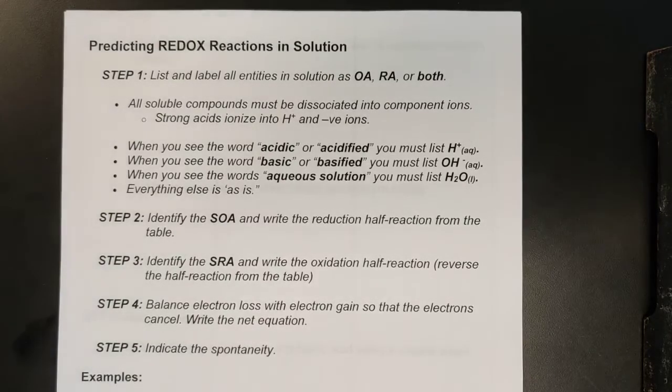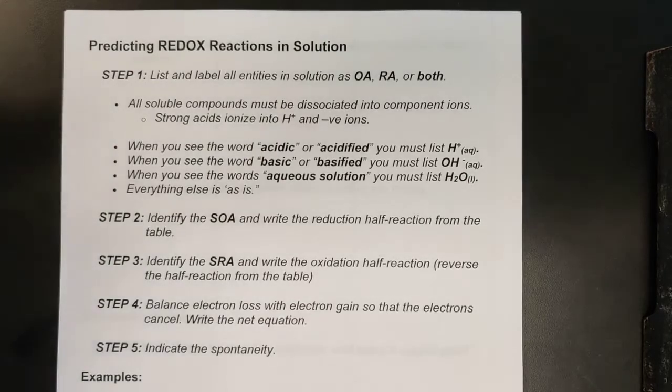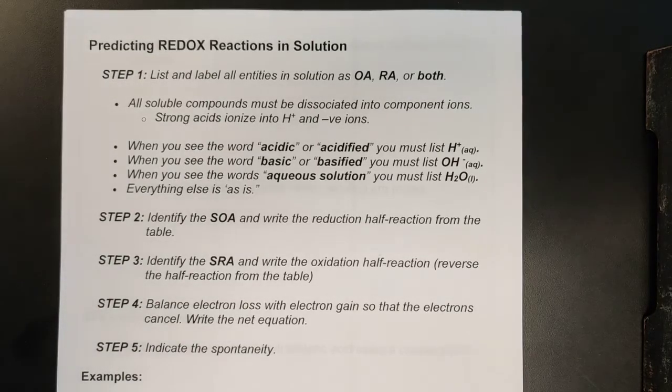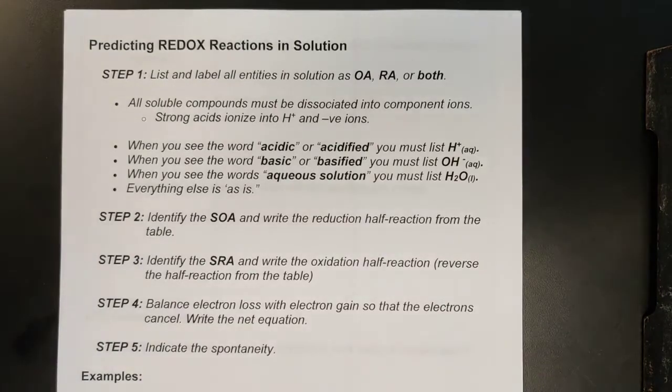Here we are with lesson 3 in 13.2. We've talked about how we can use the relative strengths of various oxidizing agents to predict if reactions will run or not. We've also looked at how we can build these tables of relative strength so we can make them and use them later on.